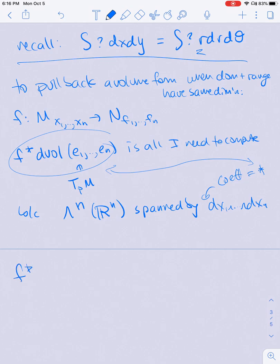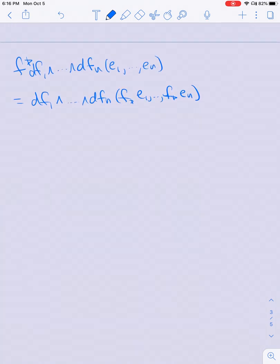So let's compute it. f pullback of df₁ wedge all the way out to dfₙ applied to e₁ through eₙ is equal to df₁ wedge all the way out to dfₙ, f push forward e₁ through f push forward eₙ. But this is just df₁ wedge all the way out to dfₙ, applied to the first column of df all the way out to the nth column of df. And then using the determinant definition of the wedge product, I'm going to end up just getting the entries in each of the columns, so this is just the determinant of the Jacobian of df.